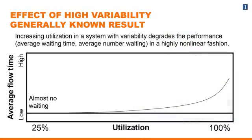Let's look at what variability means in terms of utilization and how it impacts average wait time and average flow time. On the x-axis, you have utilization going from very low — starting from about 25% — up to 100%. On the y-axis, you have average flow time, which you can also think of as average wait time. The curve shows that at very low utilization numbers there's almost no waiting, and as you move towards 100% utilization, the wait time and flow times increase steeply.